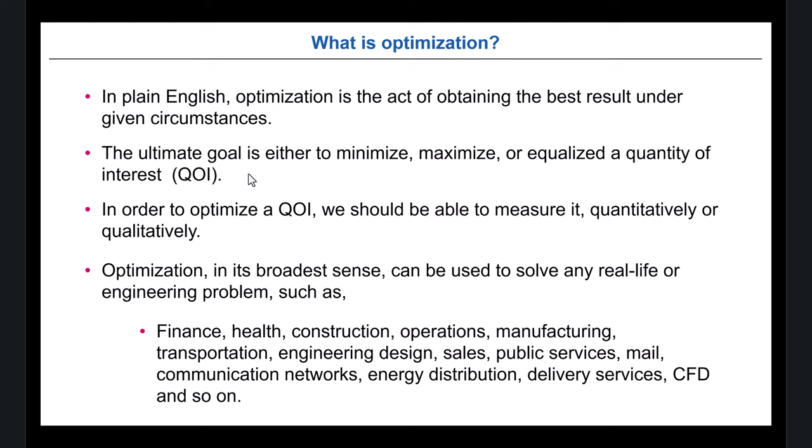In order to optimize this quantity of interest, we should be able to measure that quantity, quantitatively or qualitatively. It doesn't matter how we measure it. This is the tricky part — sometimes when we do optimization, it can be really tricky to know how to measure that. Many times we want to do, for example, classical drag reduction — that is easy — but there are some other quantities that are not very easy to quantify. In the broader sense, optimization can be applied to any real life or engineering problem. Basically, if you can measure it, you can optimize it.